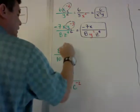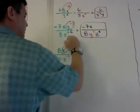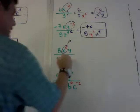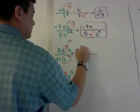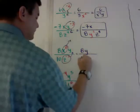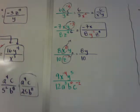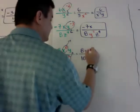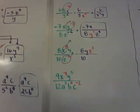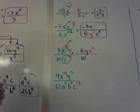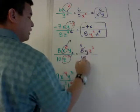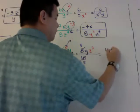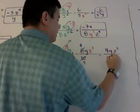Here's another one. This one I can poof out — that becomes 1. Then this one I'm going to move up. So 8y stays on the top, 10 stays on the bottom, and z to the negative 3 moves up to become z to the third on top. I also need to simplify 8 over 10, which reduces to 4 over 5. So the answer is 4y z to the third over 5.